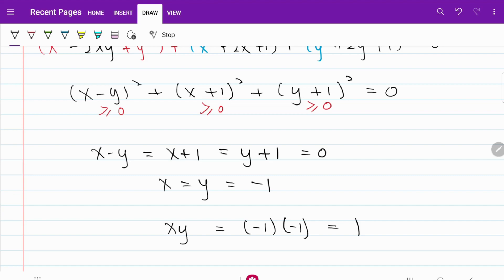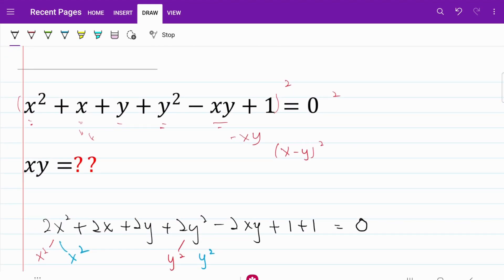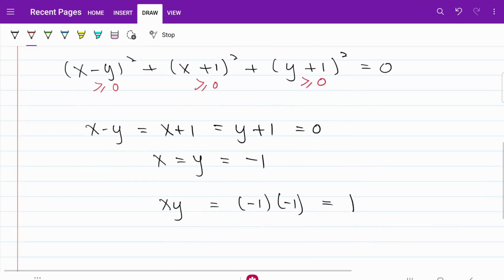Let's go ahead and try to substitute our values into the original equation to see whether things make sense. I have x and y both equal to negative 1. So x square, which is negative 1 square, will be equal to 1. x will be negative 1, y will be negative 1, y square will be plus 1, minus xy will be minus 1, and obviously the last one is plus 1. I have three negative 1s and three plus 1s, so the results cancel each other, and that's equal to 0. So our final answer is valid, where xy is equal to 1.